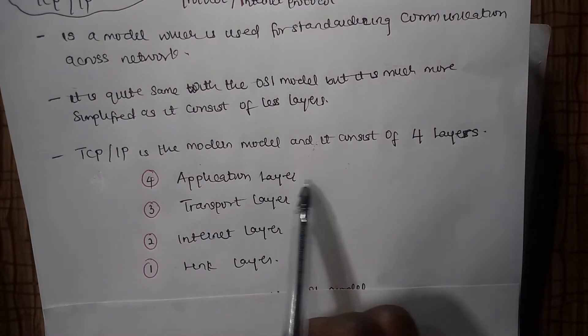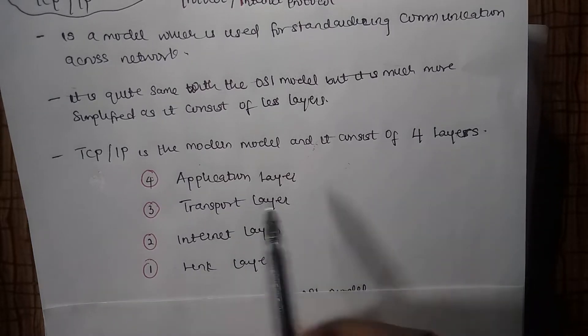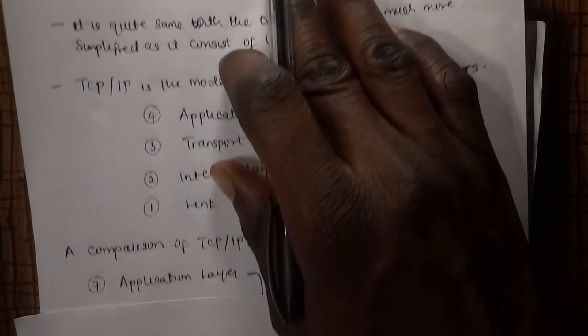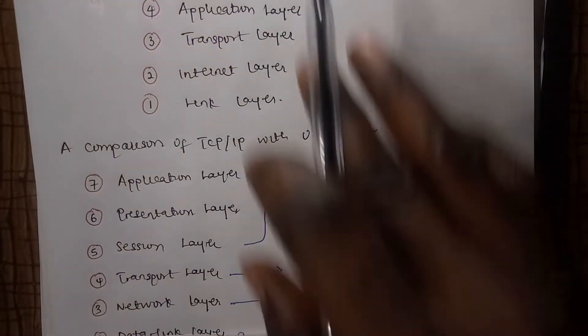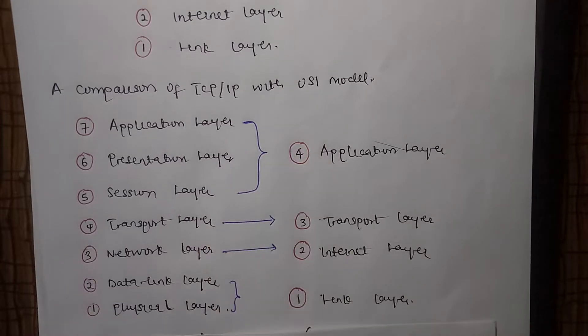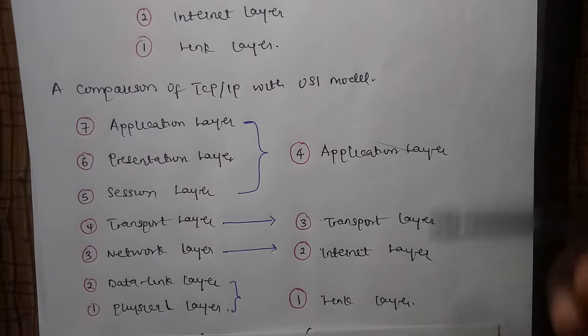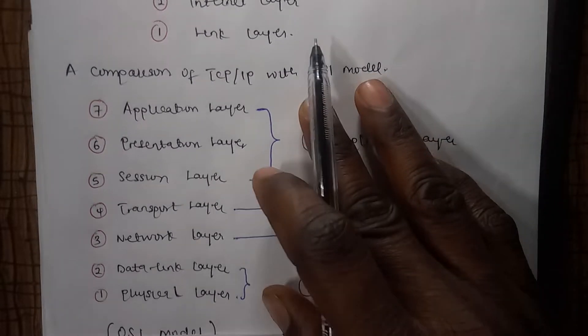First is the application layer, which is the top layer, the transport layer, the internet layer, and the link layer. What I want you to understand is that I will show you a comparison between the OSI model and the TCP/IP model. If you understand the OSI model very well, then TCP/IP would be much simpler.